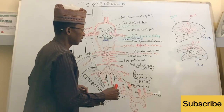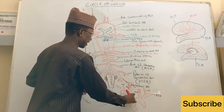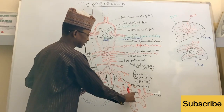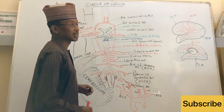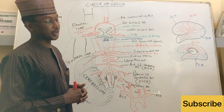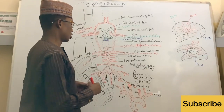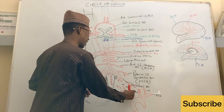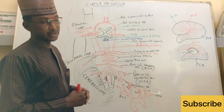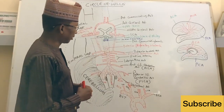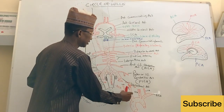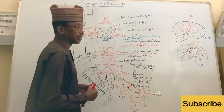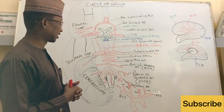On the right hand side of the arch of the aorta, we have one large branch known as the brachiocephalic trunk. From the brachiocephalic trunk, we have the right common carotid artery coming from it, and then the brachiocephalic trunk continues as the right subclavian artery.